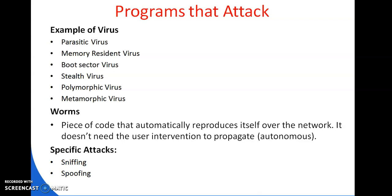A stealth virus has intelligence built-in which prevents anti-virus software programs from detecting it. A polymorphic virus keeps changing its signature on every execution, making it very difficult to detect. A metamorphic virus, in addition to changing its signature like a polymorphic virus, keeps rewriting itself every time, making its detection even harder.